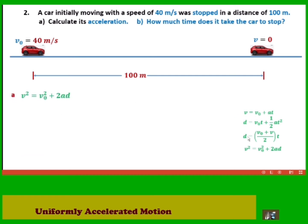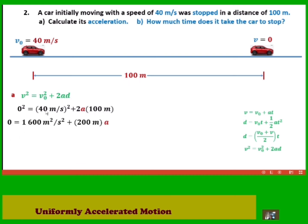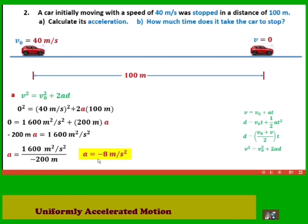We will use equation 4, since equations 2, 3, and 4 involve distance. Equation 4 is best because we have initial speed and final speed but not time. Substituting: final speed is 0, initial speed is 40 meters per second, and distance is 100 meters. Simplifying and solving for a, we transfer terms and divide both sides by negative 200 meters. The negative sign indicates the speed is decreasing.